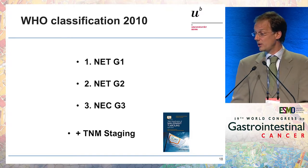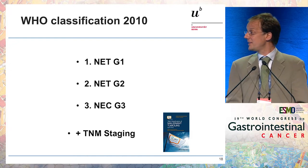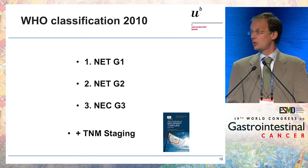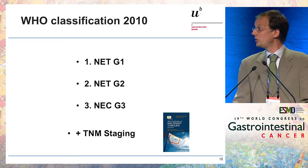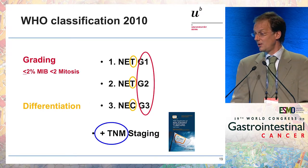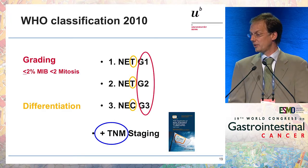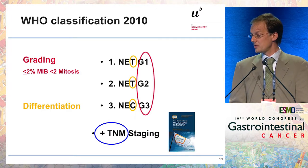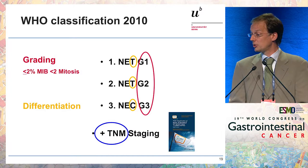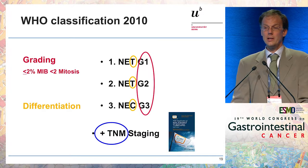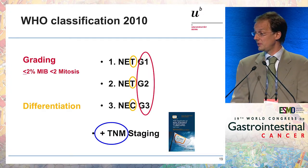What was added is a staging concept, and I'm very happy that with the new AJCC staging proposition, out for half a year now, there is no discrepancy anymore compared to the ENETS staging system — so we no longer have the problem of two different staging systems. Looking at what is in this 2010 classification: a difference between tumor and carcinoma based on differentiation, grading with a cutoff of 2% Ki67 or 2 mitoses, and staging. That was a big step forward.